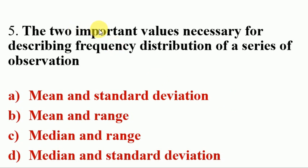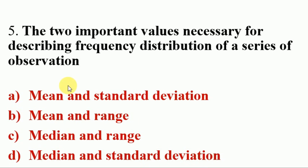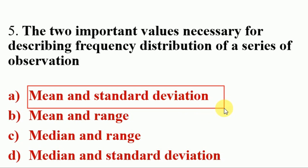Next question. The two important values necessary for describing the frequency distribution of a series of observations is Mean and Standard Deviation. Answer is A. Mean and Standard Deviation. So the two important values necessary for describing frequency distribution of a series of observations are Mean and Standard Deviation.